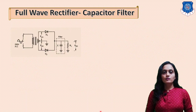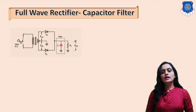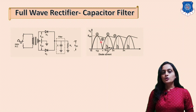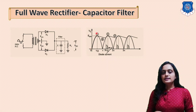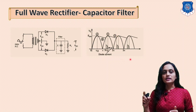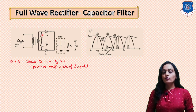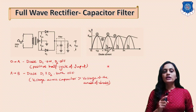Now we will see the full wave rectifier with the capacitor filter. This is the circuit diagram for the full wave rectifier with the center tap transformer, and at the output the capacitor filter is shown. The output waveform shown with the dash line is the full wave rectified output, and the dark line is the filtered output. Analyzing the filtered output, we find regions from 0 to A, then B, then C and so on. From 0 to A, we have the positive half cycle of the input, due to which diode D1 is on and diode D2 is off. The current flows through diode D1 and the capacitor charges to Vm.